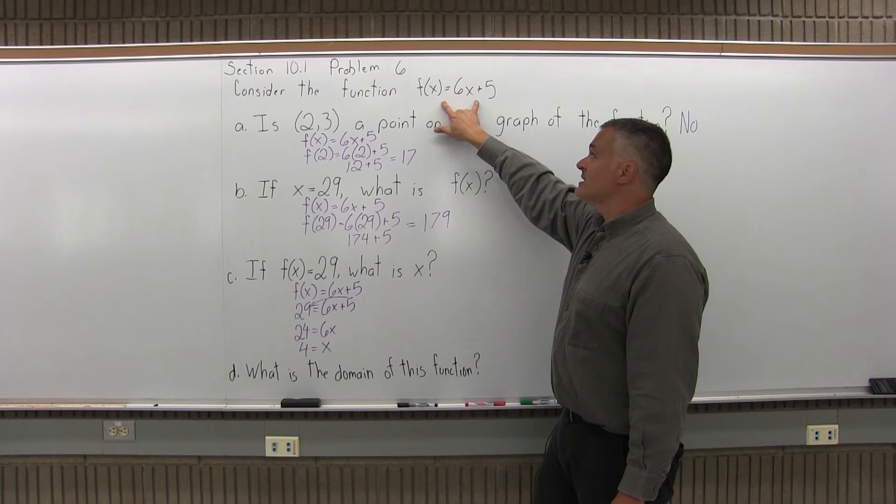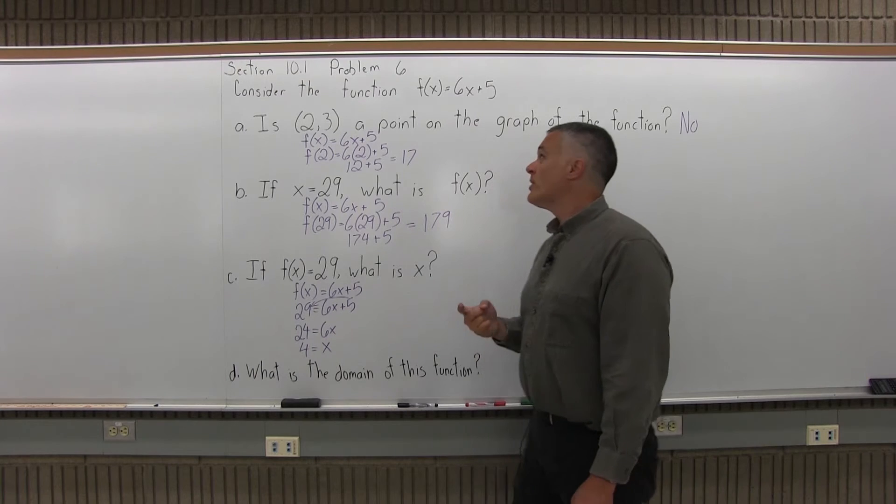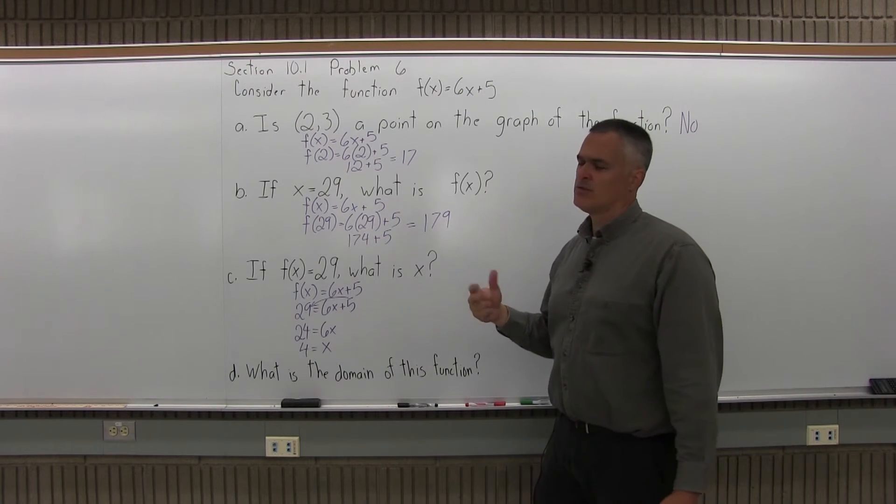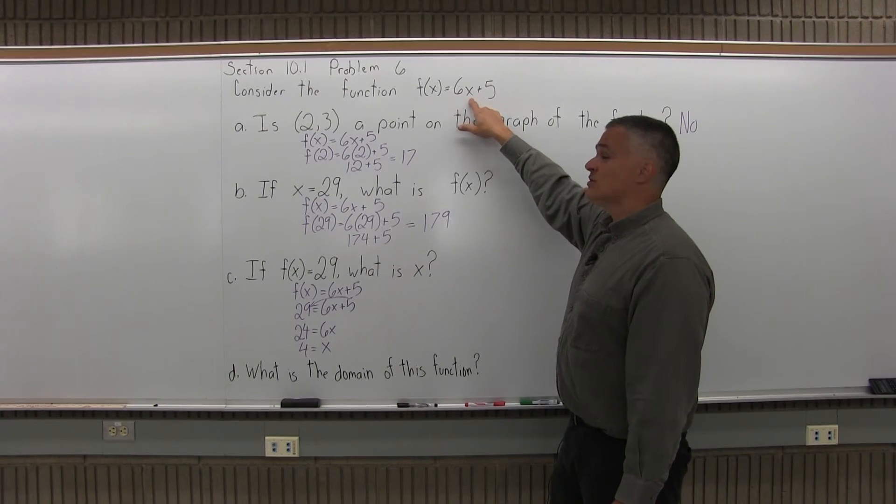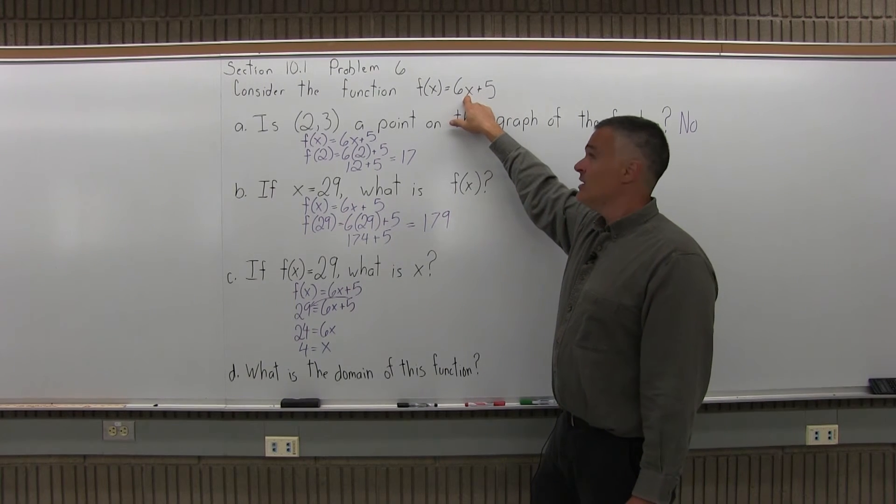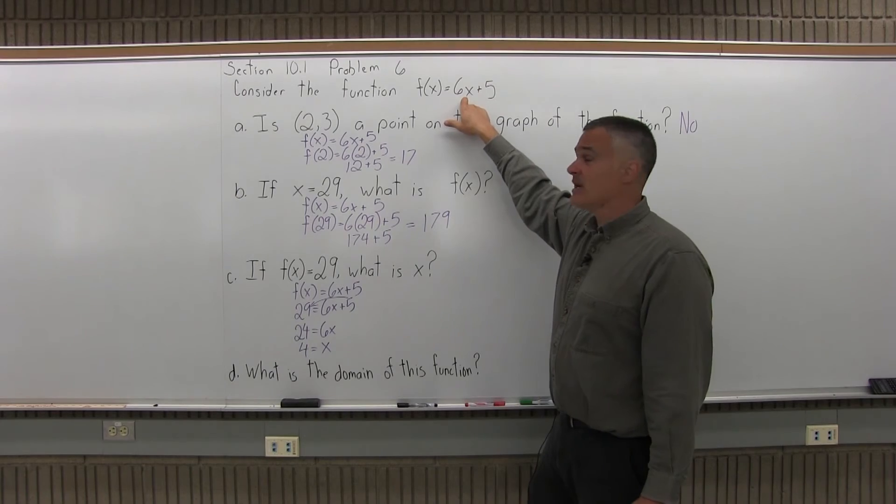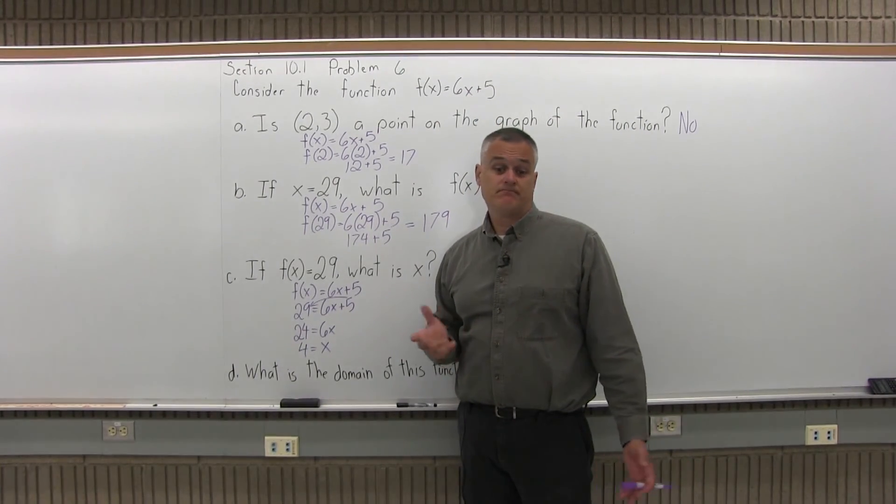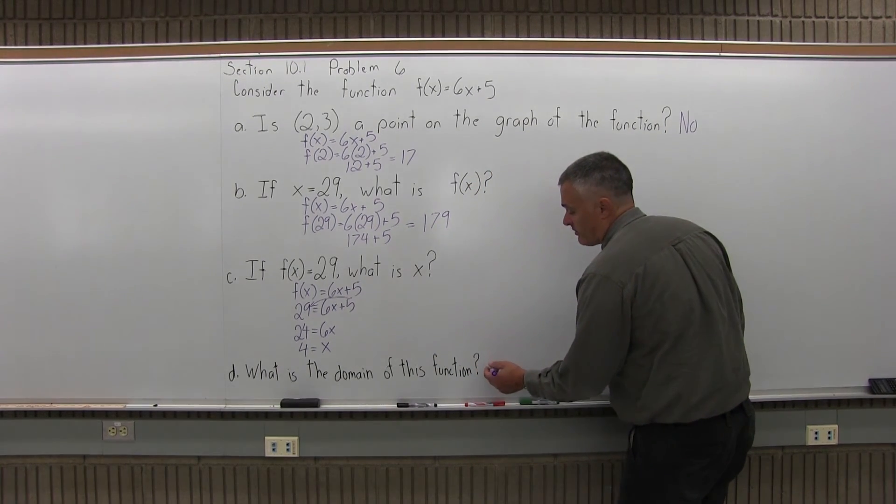So we can basically put in anything we want as long as it does not zero out the denominator, or put a negative under a square root, or more technically, an even index root. But I typically say a square root in class. This function has no denominator, and it has no type of root of any kind. So what can I put in? I can put in anything I want. I can't get into any trouble. I can put in positives, negatives, fractions, decimals, anything.